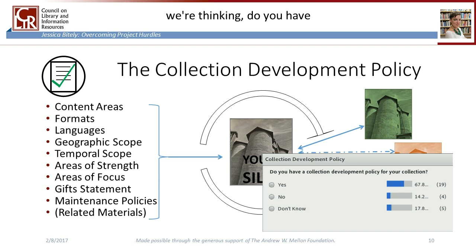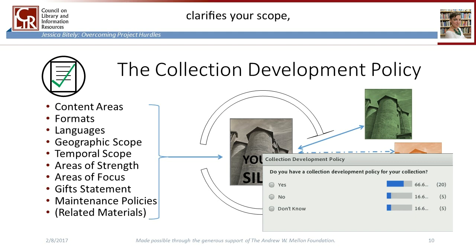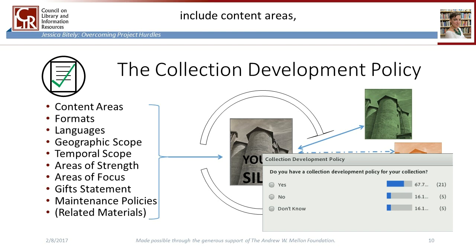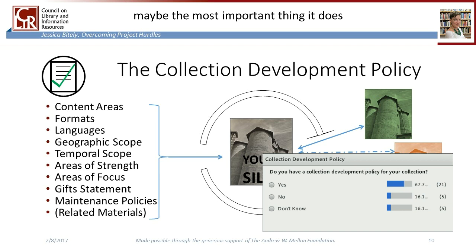We also had a poll on collection development policies. In this context, we're thinking: do you have a collection development policy for your unique or historic materials? Your mission provides your touchstone, but your collection development policy clarifies your scope, defines the shape of your collection, and makes your decision process transparent. Some of the aspects of collecting that may be included in your policy include content areas, formats, languages, etc. Your collection development policy is a tool to help you ensure responsible future collecting. While the policy defines who you are, maybe the most important thing it does is allow you to define who you aren't and to explain why.